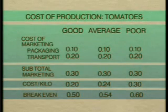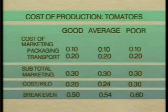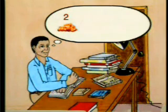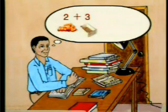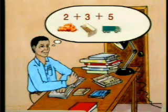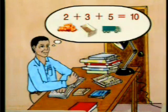There are occasions when prices are so low that growers will lose less money by not bothering to market their crop. If, for example, harvesting costs 2, packaging 3 and transport 5, the total cost is 10. If the market price is less than 10, farmers will lose money if they send their crops to market.